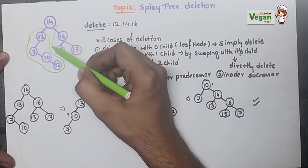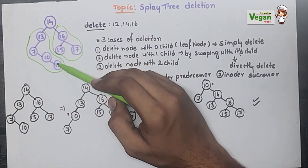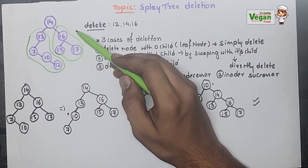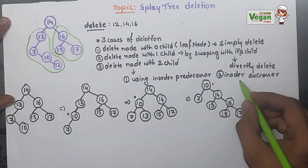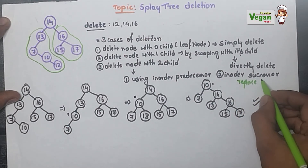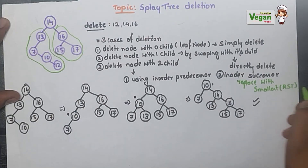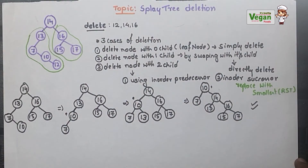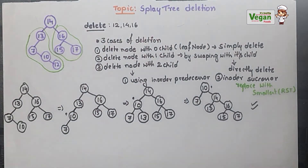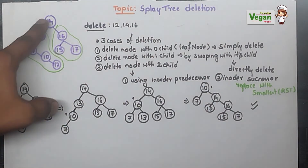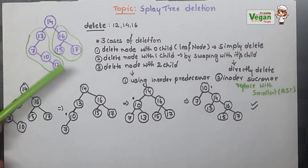In the left subtree, whichever value is greatest — I replace 14 with it. Or in the right subtree, I replace 14 with the smallest element. Let's consider the in-order successor — replace the node you want to delete with the smallest element of the right subtree. The smallest element in the right subtree is 15, so 15 will go to 14's place and 14 will come to 15's place. When 14 comes to 15's place, it will be a leaf node — and a leaf node is directly deleted.